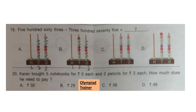Question 19: 563 minus 375 equals question mark. First calculate 563 − 375 = 188. Find the abacus which shows 188, and that is option C.